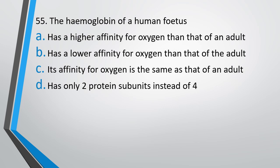Question number 55. The hemoglobin of human fetus has higher affinity for oxygen than that of an adult, has lower affinity for oxygen than that of adult, its affinity for oxygen is same as that of an adult, or has only 2 protein subunits instead of 4. The correct answer is option A. It has higher affinity for oxygen than that of an adult.